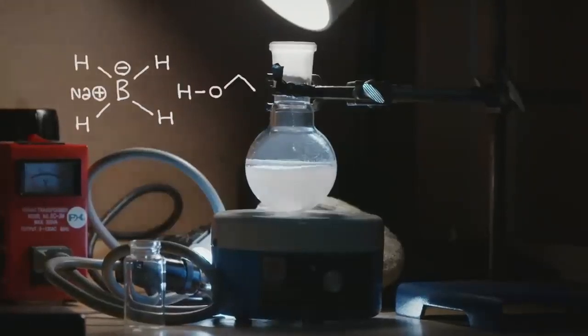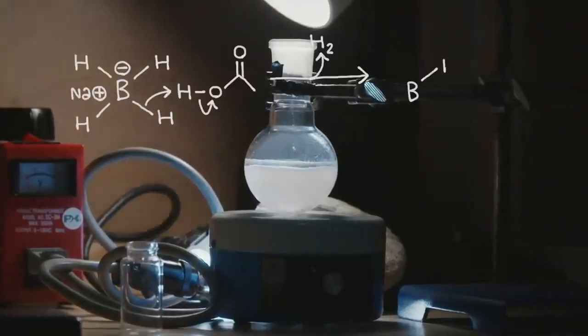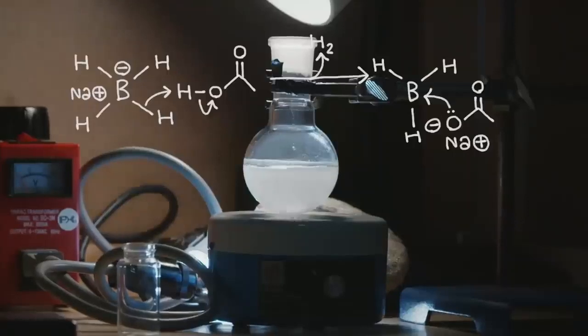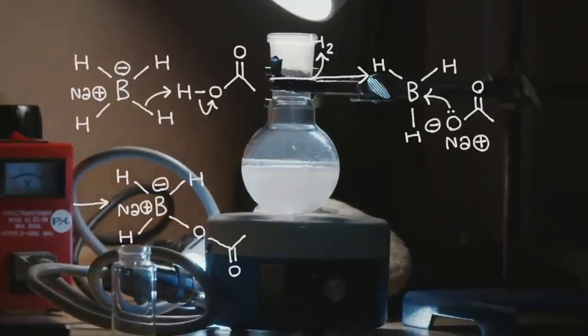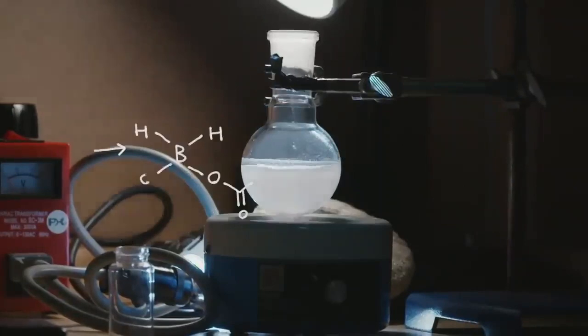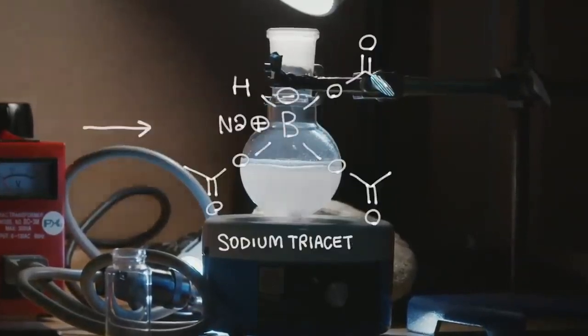An initial protonolysis reaction produces borane, sodium acetate, and hydrogen gas. Borane accepts an electron pair from the acetate anion, forming sodium monoacetoxy borohydride. The reaction repeats itself through the two remaining equivalents of acetic acid to yield sodium triacetoxy borohydride.